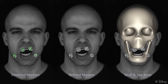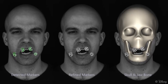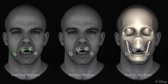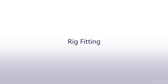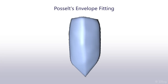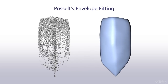Here we animate the skull and mandible bones using the recovered transformations. Tracking a reference point on the interior part of the mandible traces the shape of a shield in 3D.